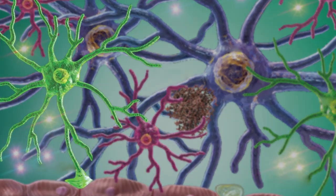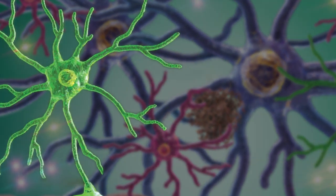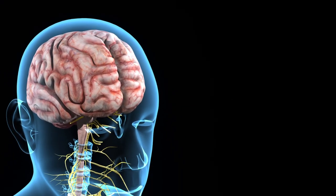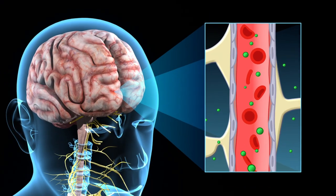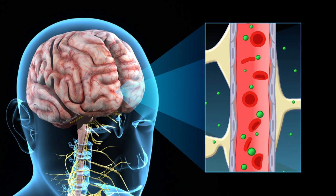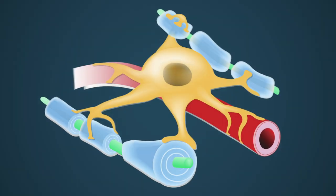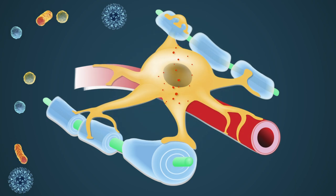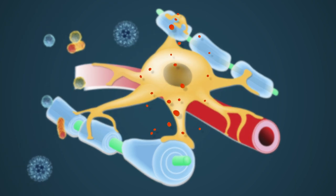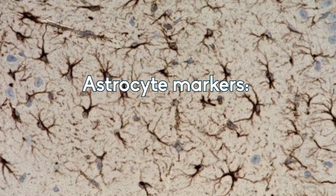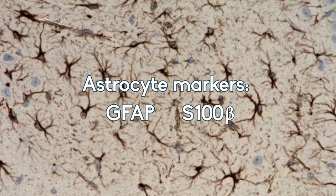Astrocytes are the most abundant glial cell type in the brain. They perform many functions such as protecting neurons against neurotoxicity and helping to maintain the integrity of the blood-brain barrier. In response to CNS injury, astrocytes change shape and alter their gene expression to upregulate the expression and secretion of bioactive molecules. Astrocytes can be identified with markers such as GFAP and S100 beta.